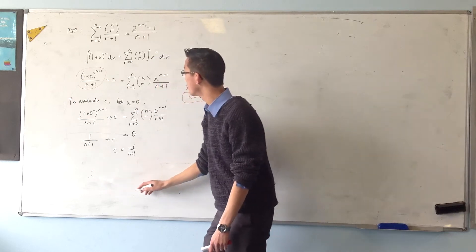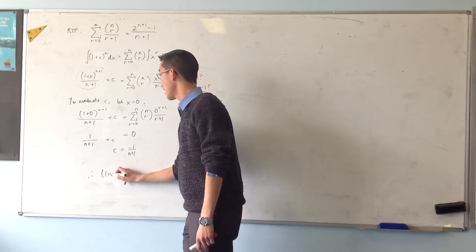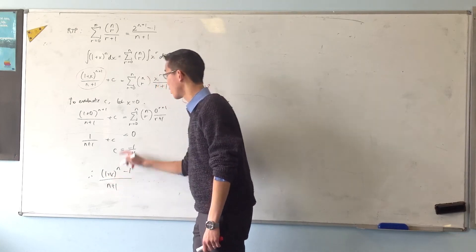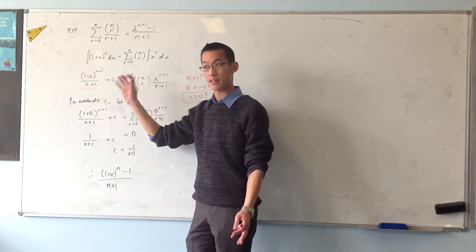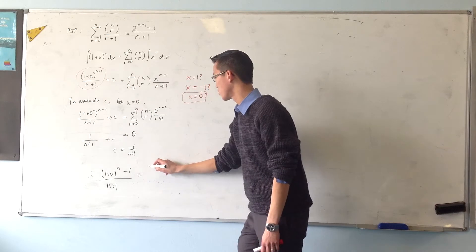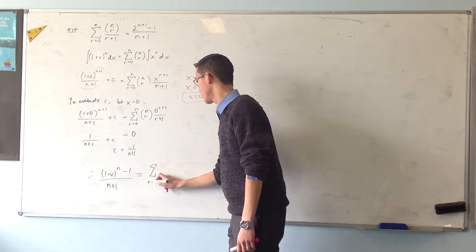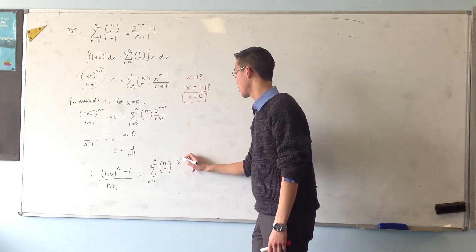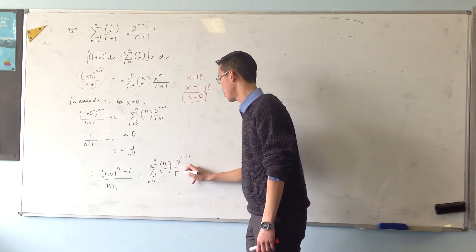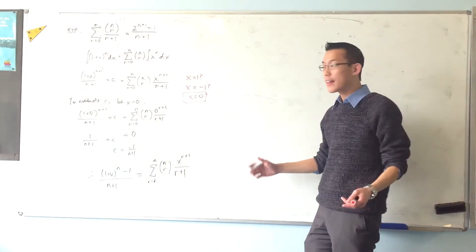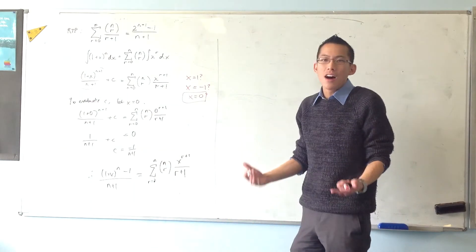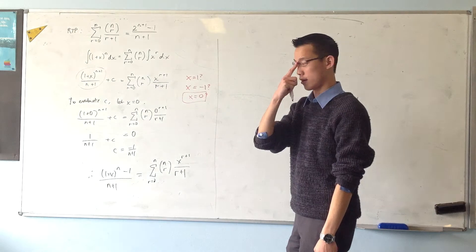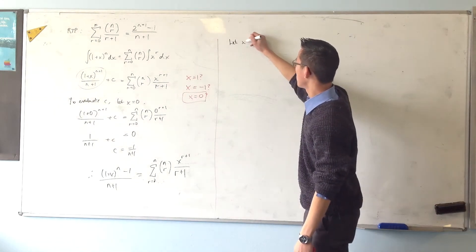And I can bring that back into this line up here. And since this is n plus 1, same denominator, I can say, therefore, 1 plus x to the n plus 1 minus 1 on n plus 1. I've just brought them together as part of the same fraction. That's equal to the sum of 0 to n, n choose r, x to the r plus 1, over r plus 1. So now that I've gotten rid of my constant, now it's actually a helpful time to say, well, for this case, let's let x equal 1.